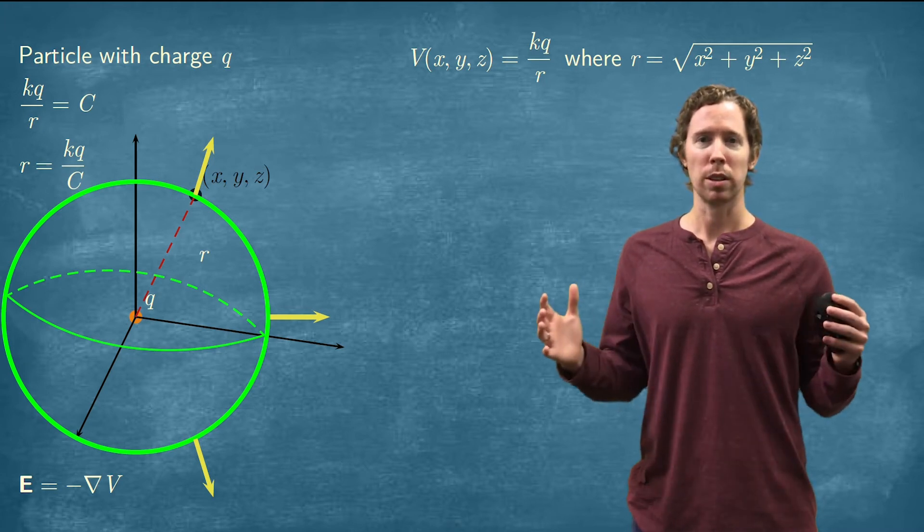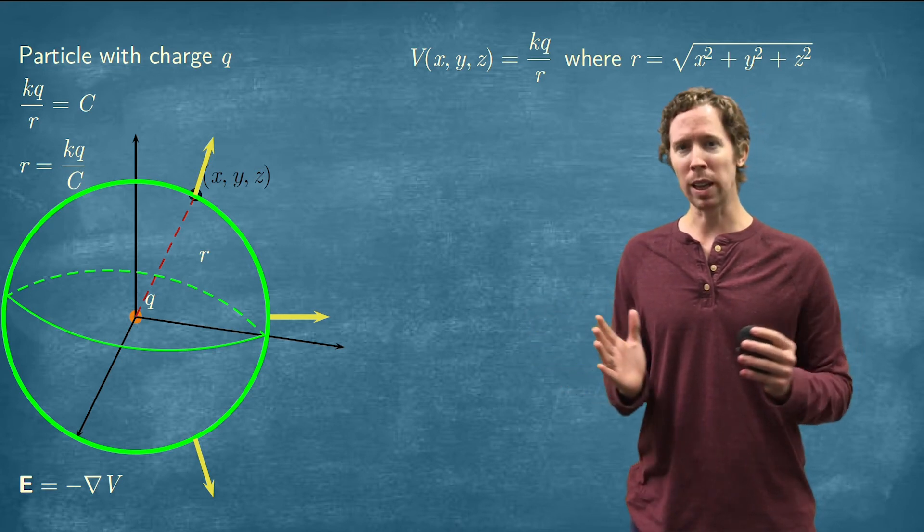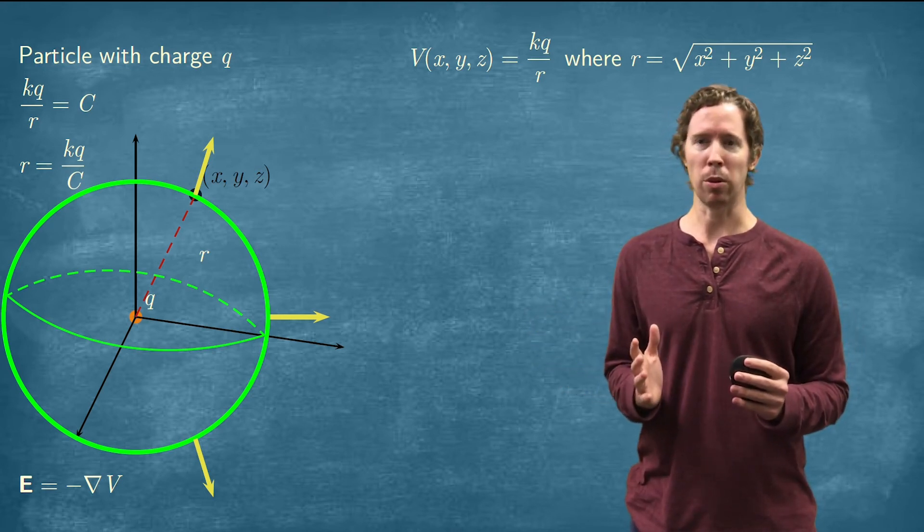As you go out, these vectors are getting smaller and smaller. As you go in, they're getting larger and larger. They're all pointing out.